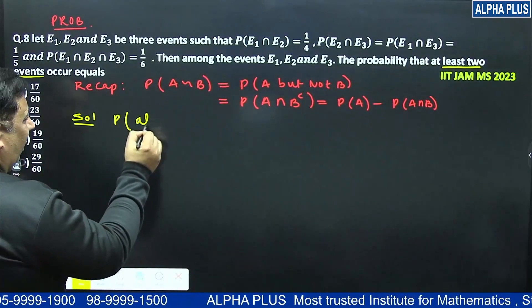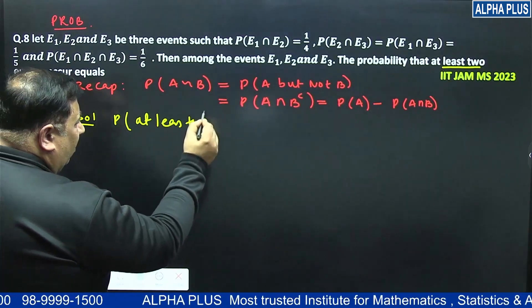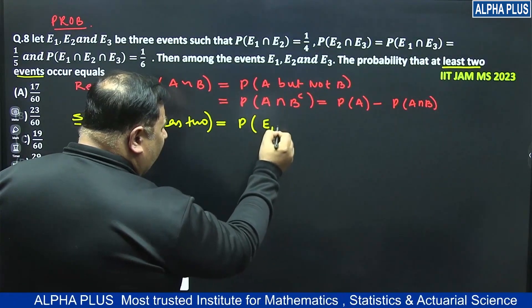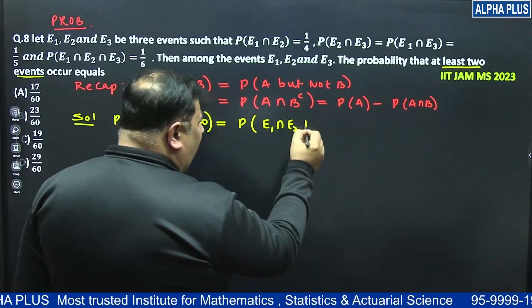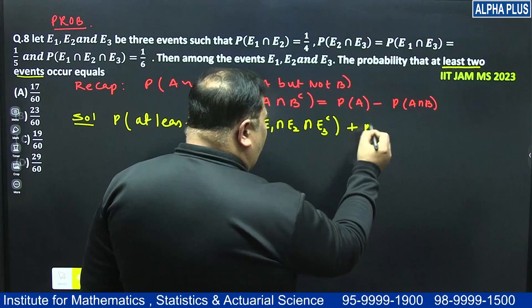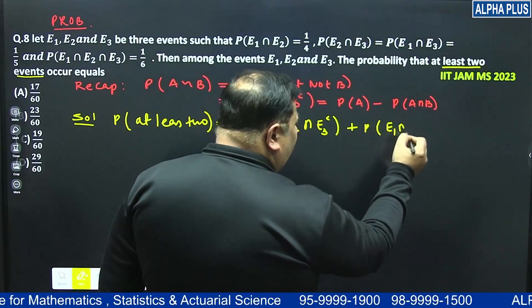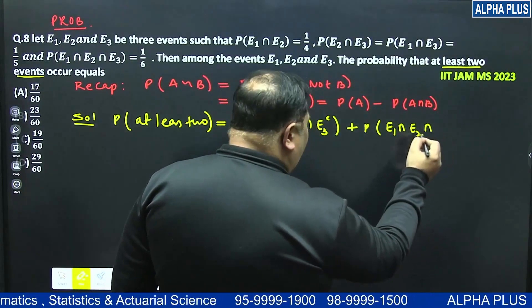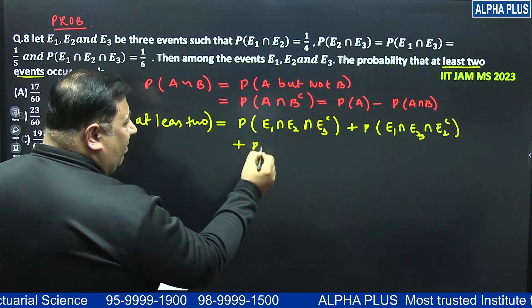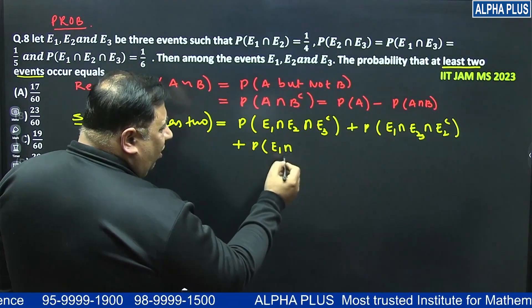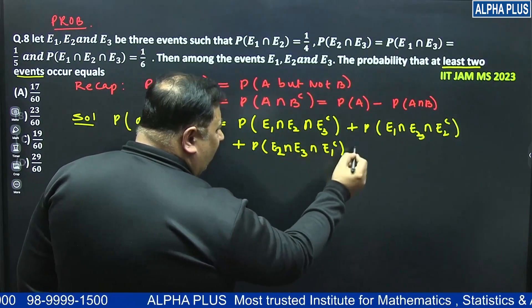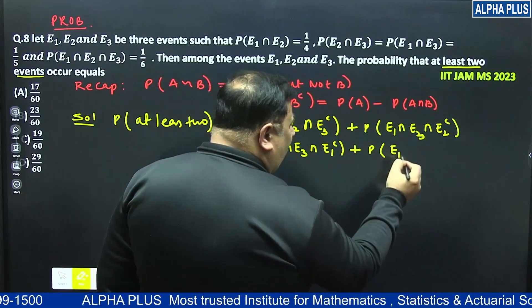So the probability of at least two events: first case — e1 occurs, e2 occurs, but e3 does not occur (not e3). Similarly, probability e1 occurs, e3 occurs, but not e2 (complement). Similarly, probability e2 occurs, e3 occurs, but not e1.